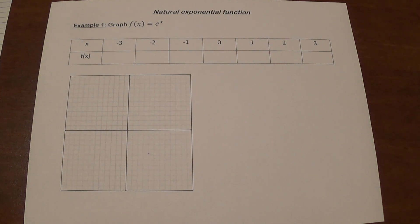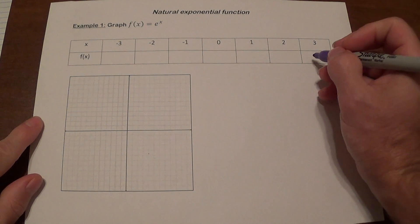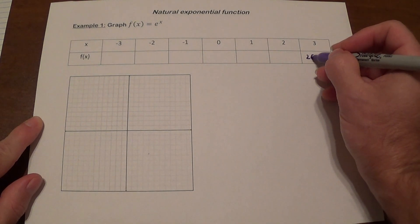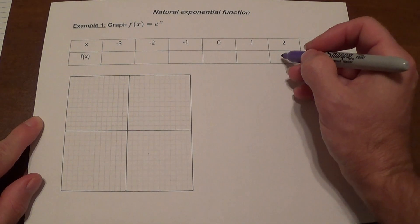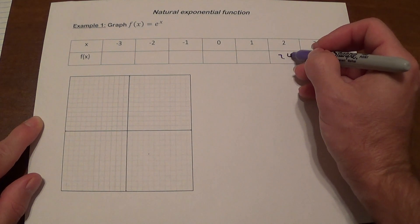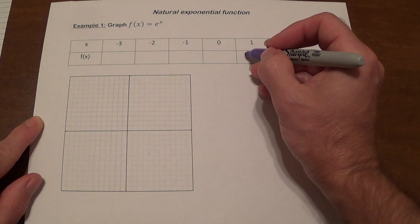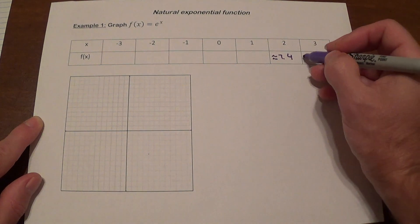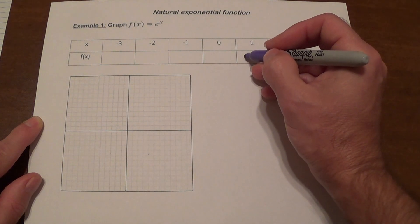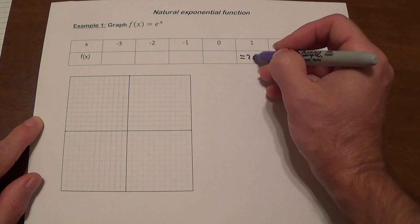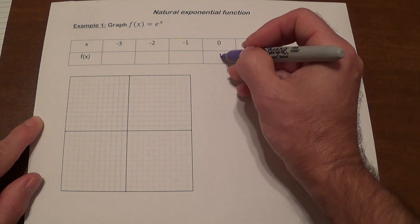For x equals 3, that's approximately 20.1. For 2, it's 7.4. Approximately, these are approximate values. For 1 is going to be approximately 2.7. For 0, it's 1, of course.